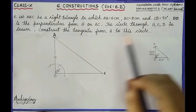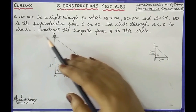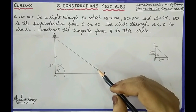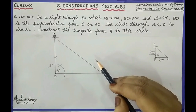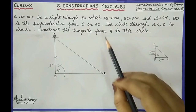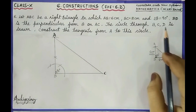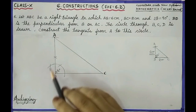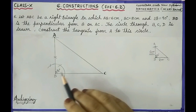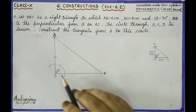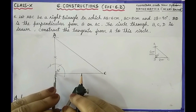Then we have to draw BD perpendicular from B to AC, and then the circle through BCD is drawn. Here I will give you a trick which makes this construction very easy and not complicated. Before drawing the perpendicular line, let us first draw a circle passing through B and C. For drawing the circle, we need a center. The center will be the midpoint of BC because BC will be the diameter. So we have to bisect the line BC, and from that midpoint draw the circle.